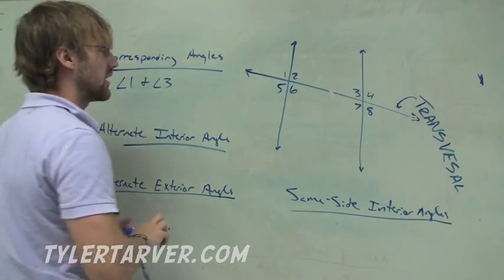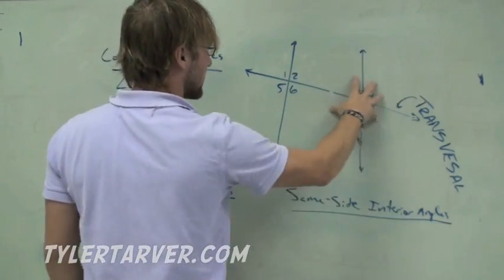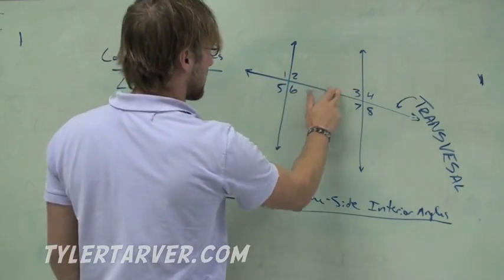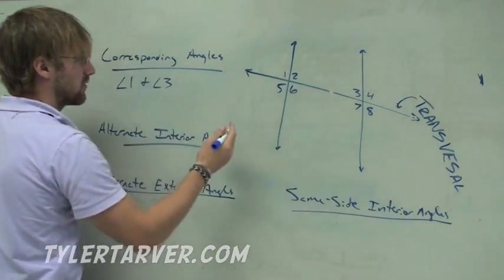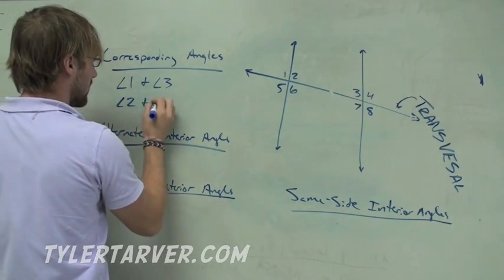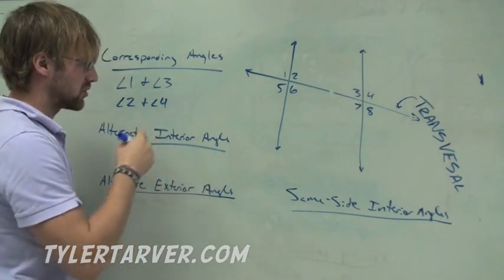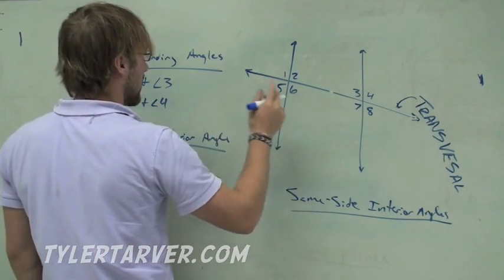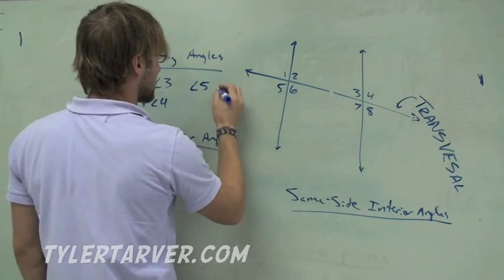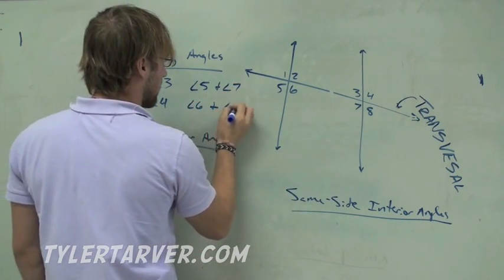Now, another way to look at it is, some people like to imagine that you get this section, you pick it up and stick it on top of this section. The corresponding angles will be right on top of each other. So 1 will be on top of 3. We want to do the rest of them. We know 2 is going to match up with 4. If you want to finish the other two, you can press pause and figure it out.